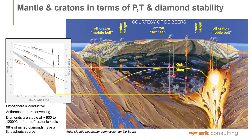Kimberlites that take off from inside the cratonic root and inside the diamond stability field will entrain packets of mantle material and transport that to surface — a small proportion of those will ultimately become the diamond mining industry. Some are illustrated as failed kimberlites that died before reaching surface. Others collect material in the lower crust as well, erupting a mixture of mantle-derived material and shallower crustal stuff, making a distinct impression on the mineralogy seen at surface.